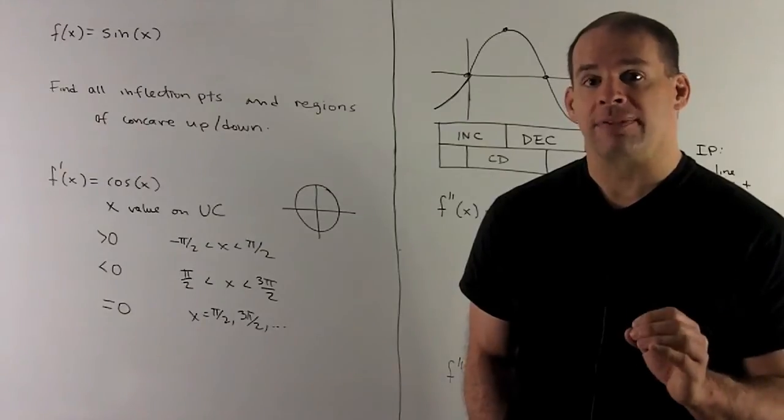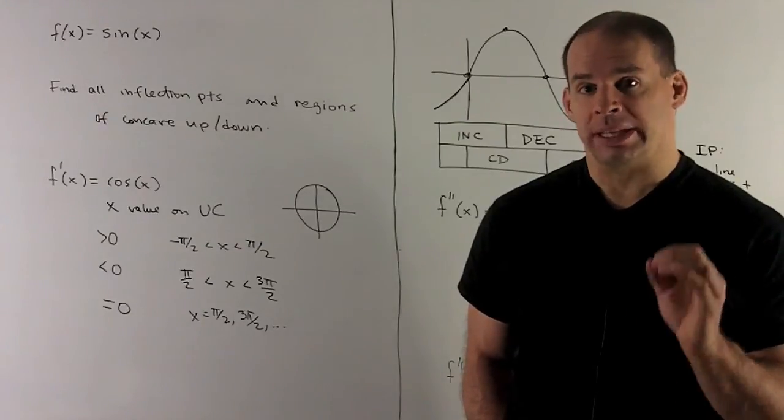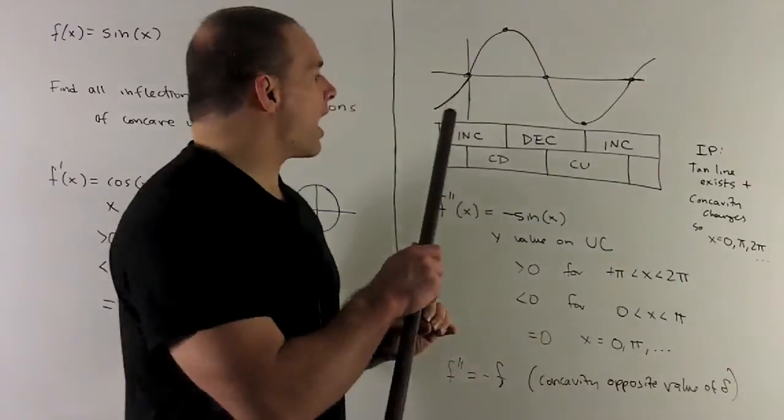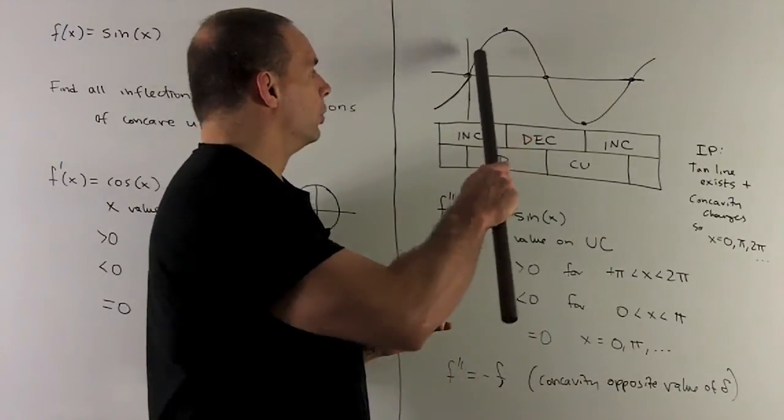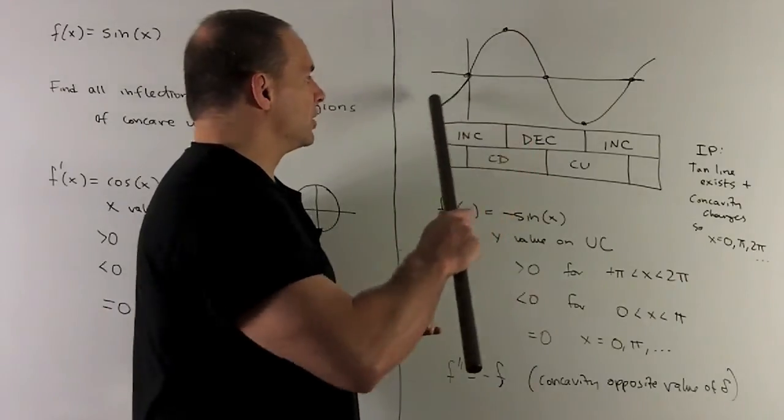That means on the graph, for sine of x, we'll be increasing. If we take a look at our graph, so we're going from minus pi halves to pi halves, we'll note that is definitely increasing on that region.